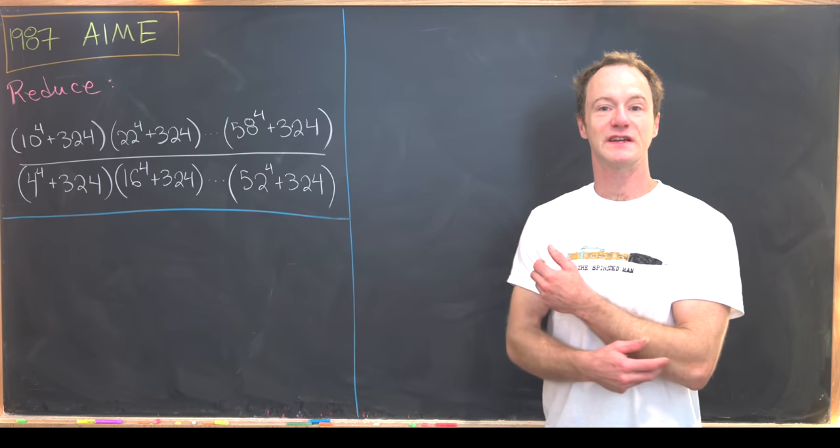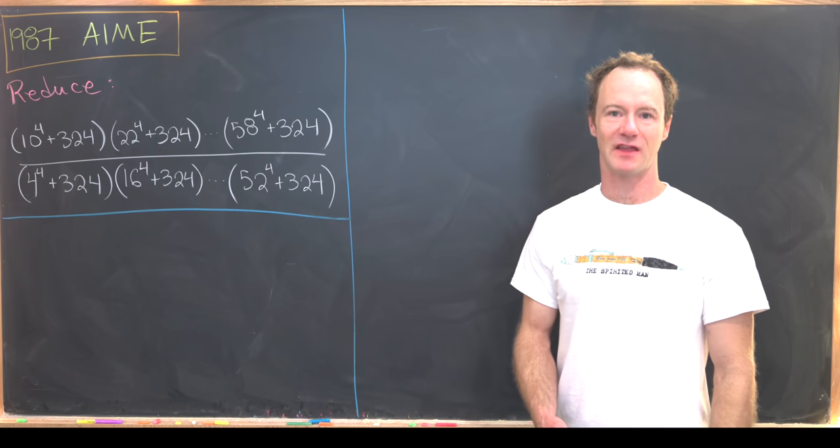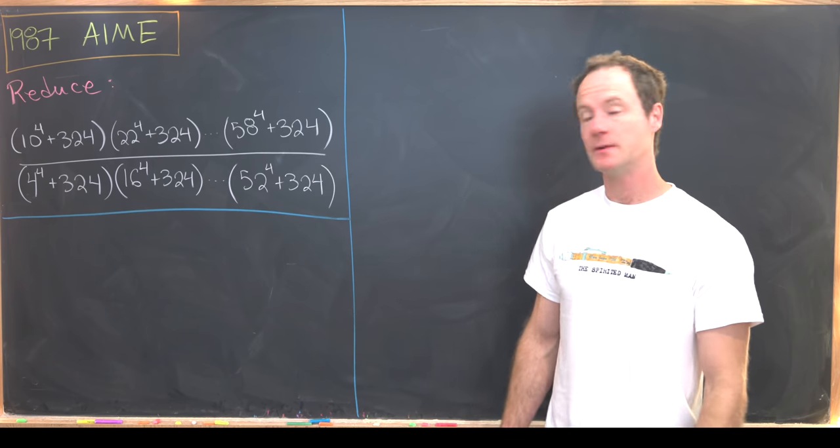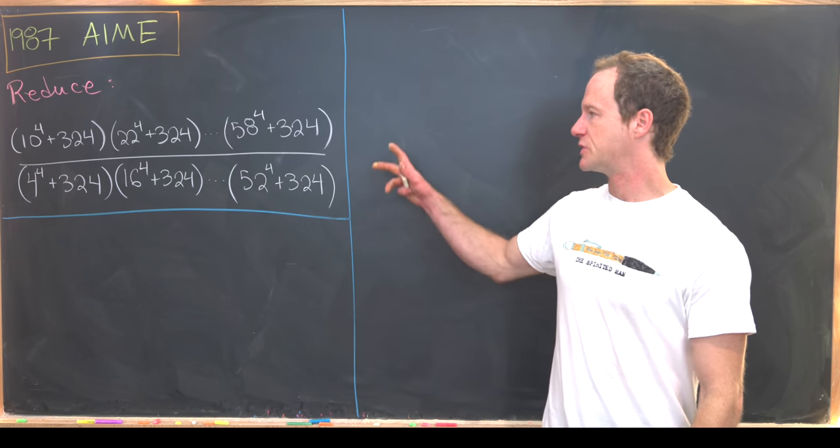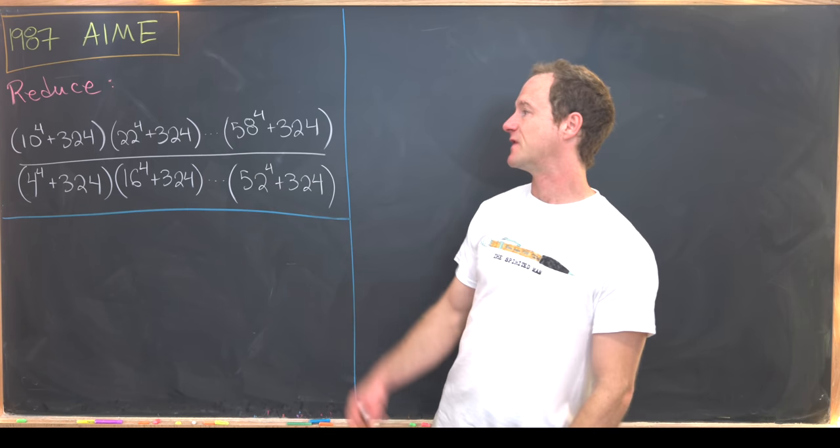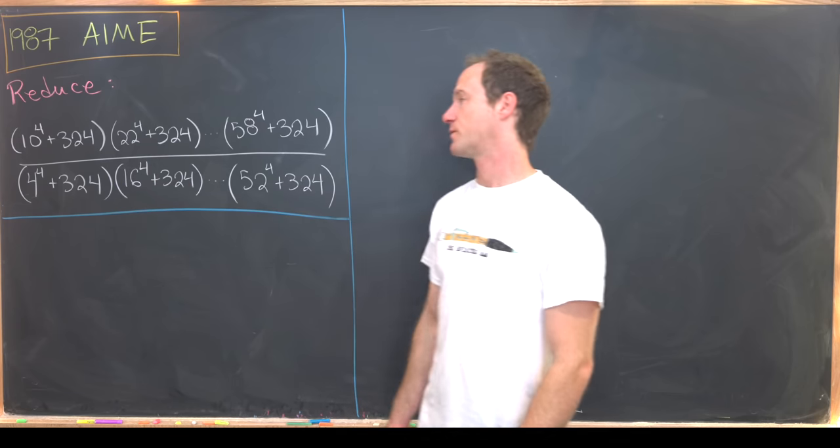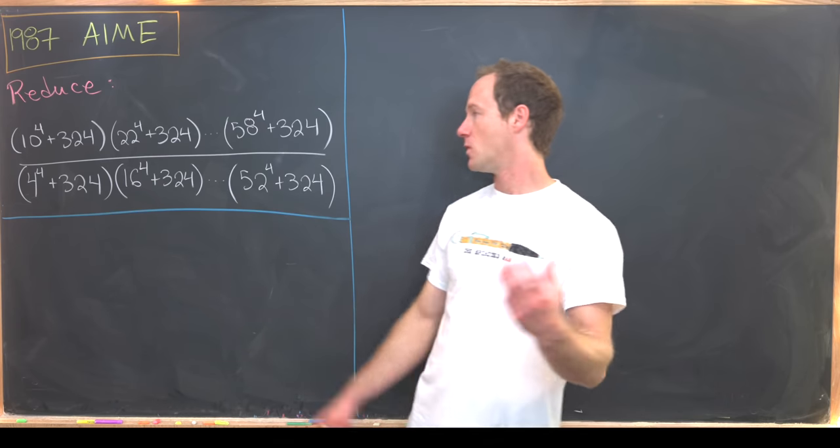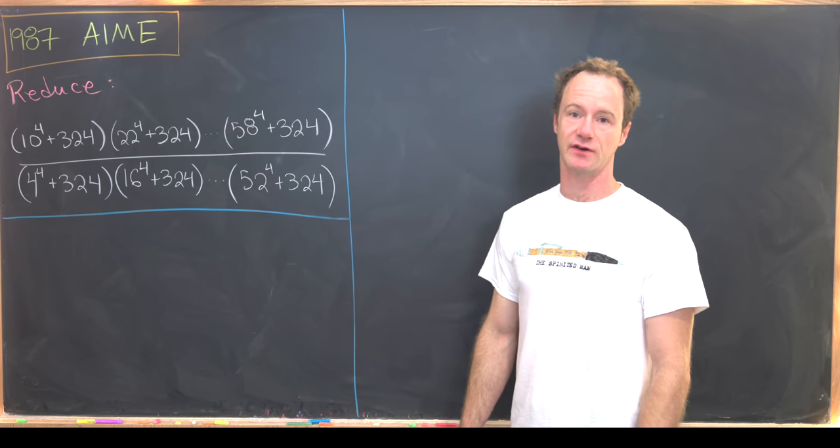Here I've got a nice arithmetic problem from the 1987 American Invitational Mathematics exam, or the AIME. So let's see what we need to do here. We want to reduce the following very complicated fraction. We've got 10 to the fourth plus 324, 22 to the fourth plus 324, multiplied all the way up to 58 to the fourth plus 324.